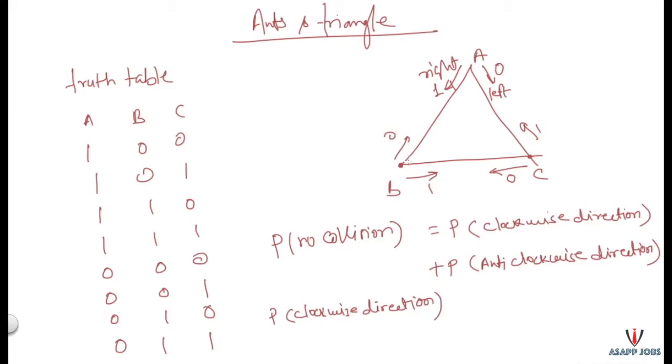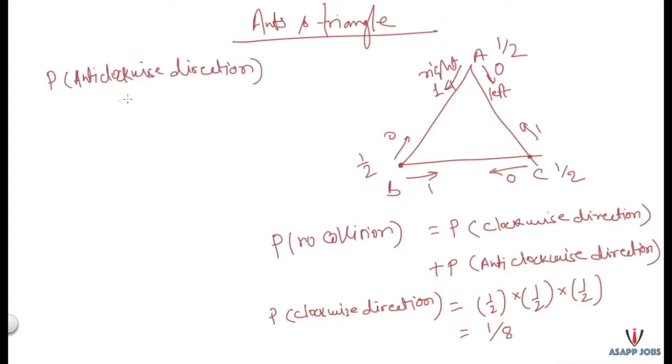Each ant has a probability of 1 by 2 to move in any direction. So the probability that all ants move clockwise is 1 by 2 into 1 by 2 into 1 by 2, which is 1 by 8. In the same way, the probability of anti-clockwise direction is also 1 by 2 into 1 by 2 into 1 by 2, which is 1 by 8. So probability of no collision would be 1 by 8 plus 1 by 8, and that is 2 by 8, which is 0.25.